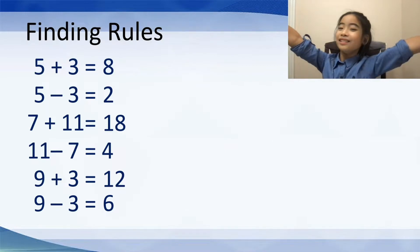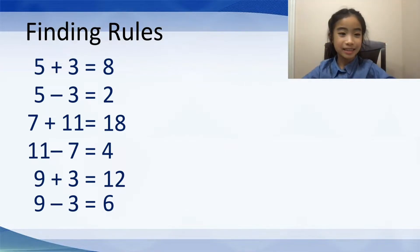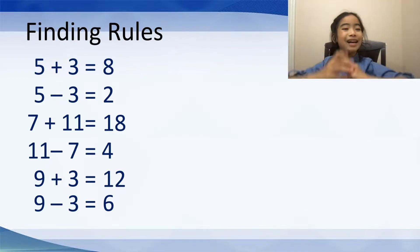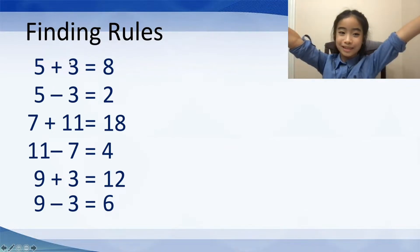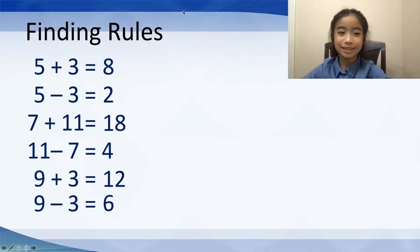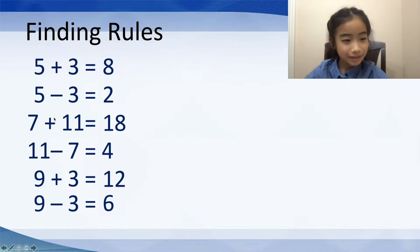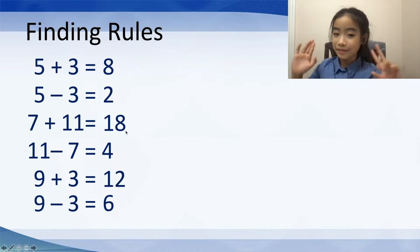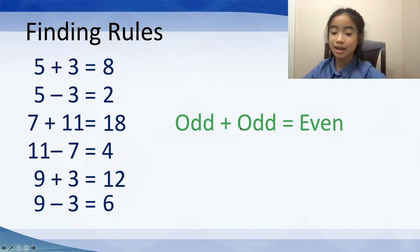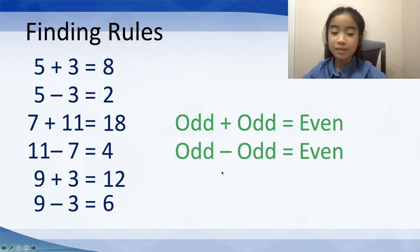There are also some rules in these operations — can you find it? Now let's find it together. The two numbers on the left side of the equation sign are odd numbers. The result is an even number. Why not use 7 plus 11 equals 18? 7 and 11 are both odd numbers, and the result is 18, which is an even number. So here we have: odd plus odd equals even, and odd minus odd equals even.